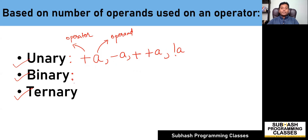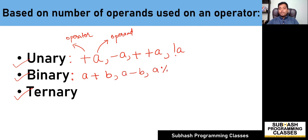Now coming to binary operators — those operators which operate on two operands are called as binary operators. For example, 'a + b': plus is an operator operating on two operands. Other examples include 'a - b', 'a % b', or 'a << b' (left shift). All of these operators are operating on two operands, and that is the reason we call them as binary operators.